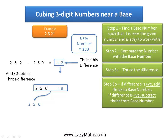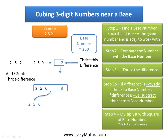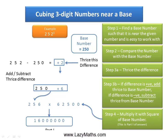The last step to get Part 1 of the answer is to multiply the square of the base number 250. The square of 250 is 62,500. We need to multiply this with 256, and we get 16,000,000 as Part 1 of the answer.